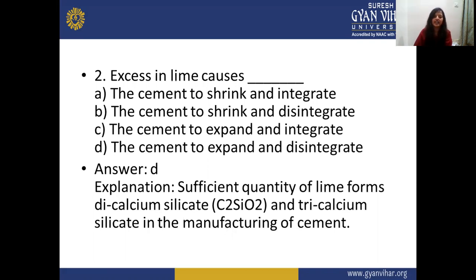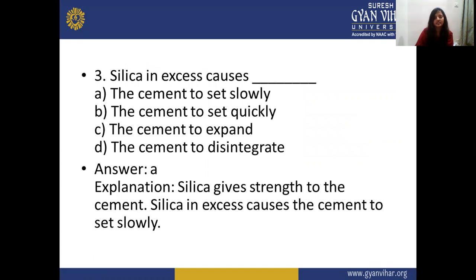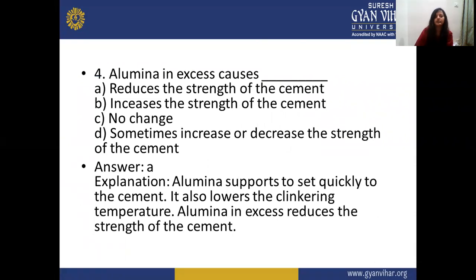Sufficient quality of lime forms dicalcium silicate and tricalcium silicate in cement manufacturing. Silica in excess causes the cement to set slowly — silica gives strength to the cement but excess silica slows setting. Alumina in excess reduces the strength of the cement — alumina supports quick setting but lowers the clinkering temperature and in excess reduces strength.